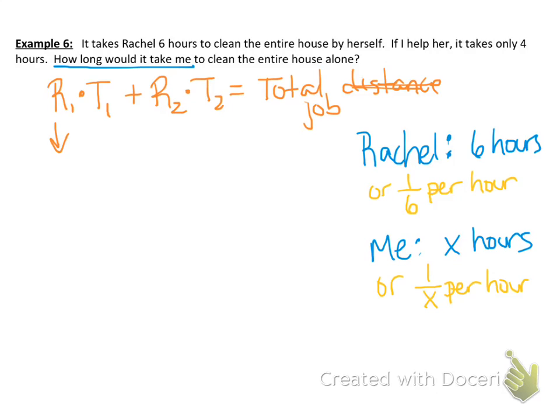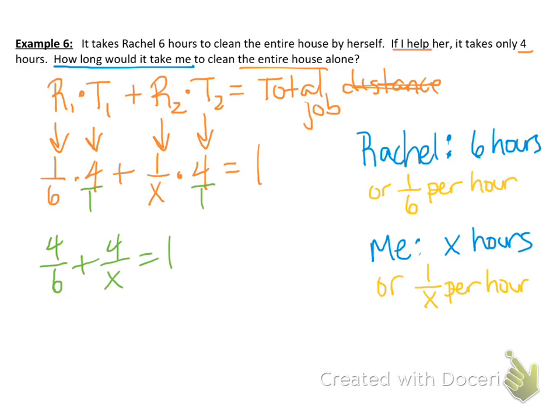So let's go ahead and put this in. Rachel's rate is one-sixth times her time. Well, I'm helping her. We're doing it together. So we're both, on this job, going to be working for four hours. Plus my rate, which is one over x. And again, we're working four hours together. And this is going to equal one entire house. Now, if we were going to want to know how long it would take to clean three houses, then this would be equal to three, because we're initially given that it takes six hours to clean one house. Again, simplifying this, it's four over one. So when we multiply, we get four-sixths, plus the four is over one. So four over x equals one. Let's get the right-hand side in one fraction.